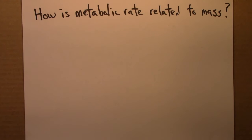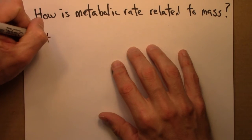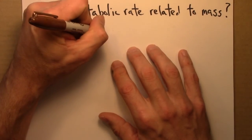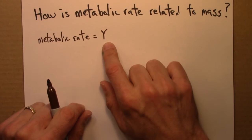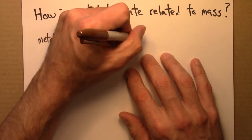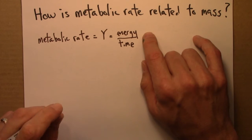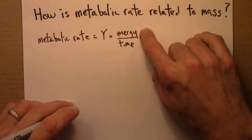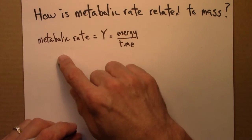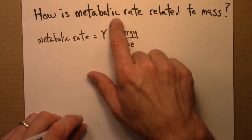First, let me say a little bit more about what I mean by metabolic rate and fix some notation. Metabolic rate is usually denoted by a capital Y, and that's an energy per time. This says how much energy does the creature expend, or how much energy does it need to consume — how much food does it need to eat per day, per minute, per hour — in order to just survive. The metabolic rate here is usually taken to be the basal metabolic rate.